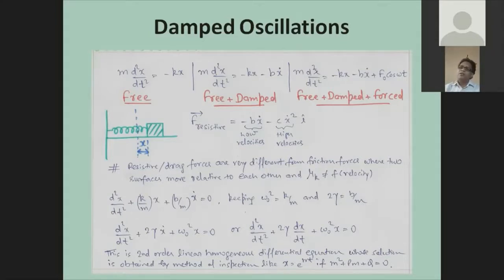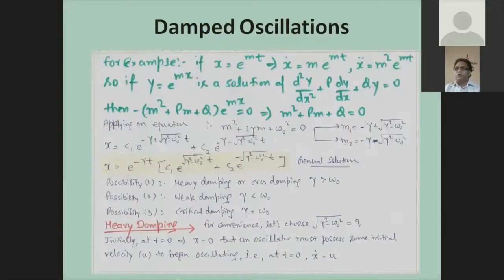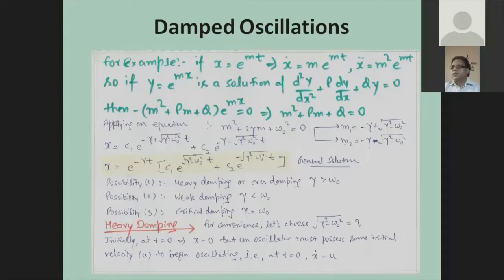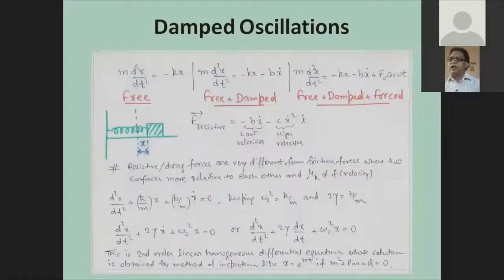With some adjustment of terms, we start solving this second-order linear homogeneous differential equation. The popular technique used is providing our solution by inspection. The roots we get from this help us obtain the general solution, which contains an interesting term: the square root of (γ² − ω²), which is nothing but a frequency. Here γ is a new term including the damping characteristics of the medium — it is b/2m, where b is the damping coefficient.